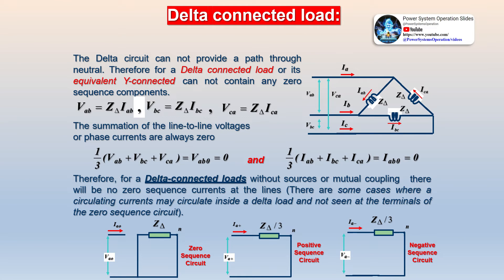The phase sequence of the positive component is Va, Vb, and Vc, and the phase sequence of negative components is Va, Vc, and Vb.